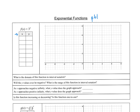If I plug in numbers like 1, 0, negative 1, positive 2, negative 2 — plugging in 1 gives us 3 to the first power, which equals 3. Plugging in 0 gives 3 to the 0, which is 1. And 3 to the negative 1 is 1 third.